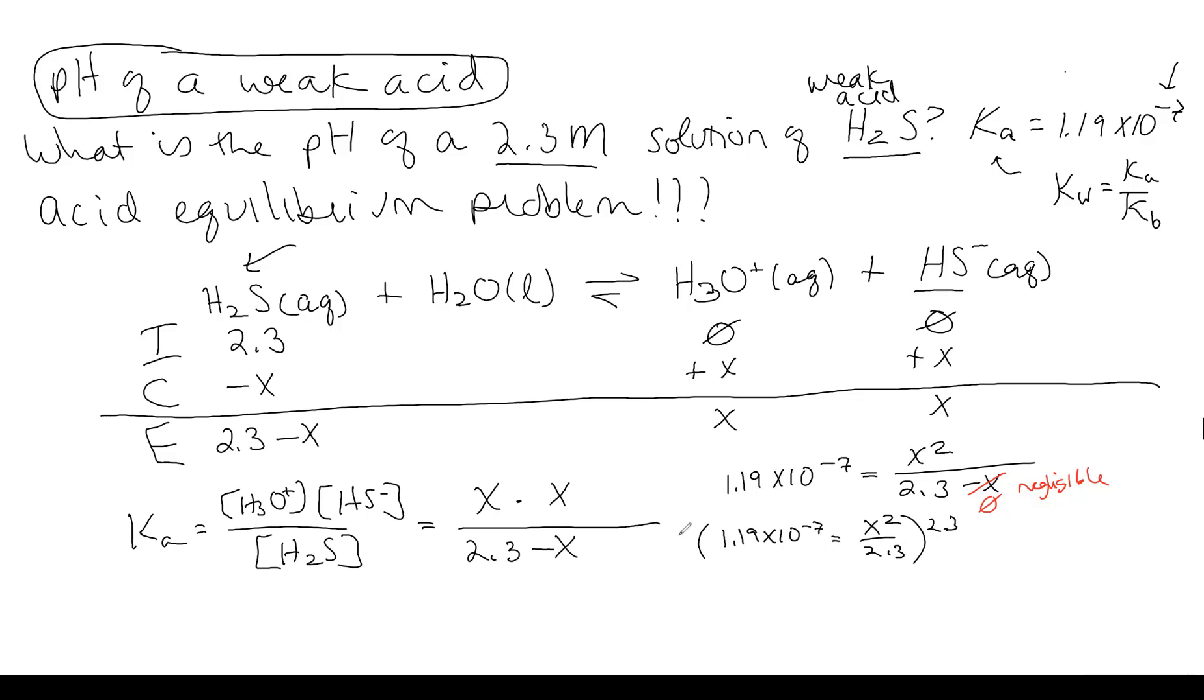We want to isolate that X. So we're going to multiply both sides by 2.3. That's going to give us 2.3 times 1.19 times 10 to the negative 7. We're going to multiply those two guys together. It's going to be equal to X squared. Let's do that multiplication. Now we have 2.737 times 10 to the negative 7 equals X squared. We're going to take the square root of both sides. And we're going to end up with X equals 5.231 times 10 to the negative 4.